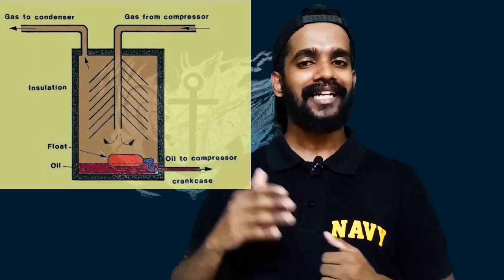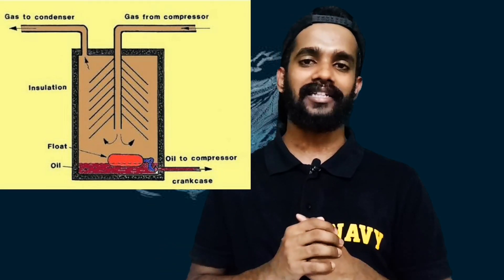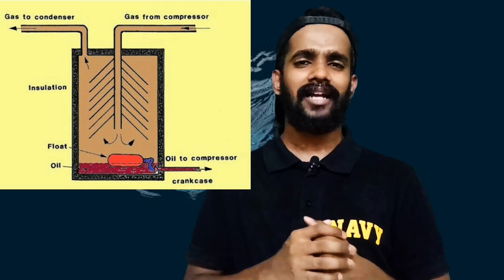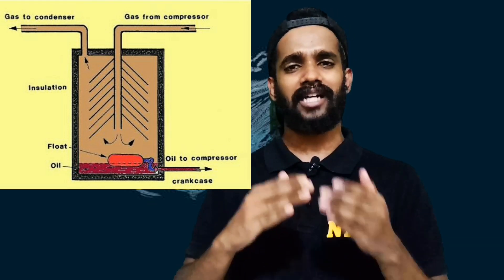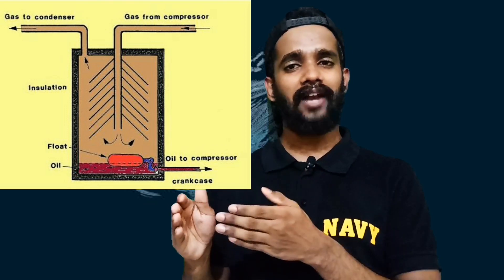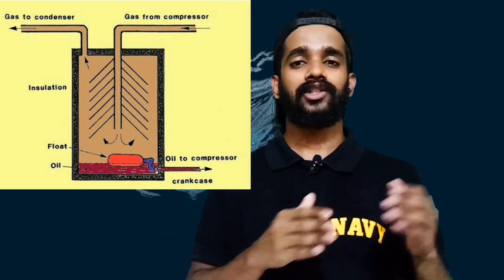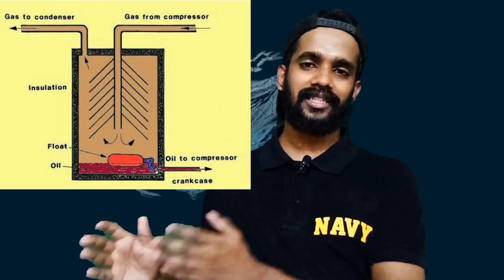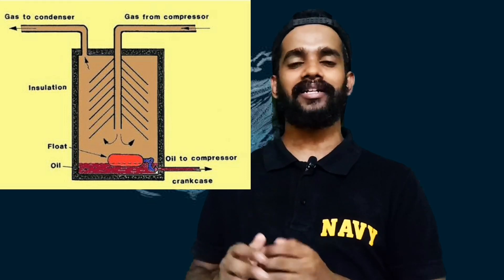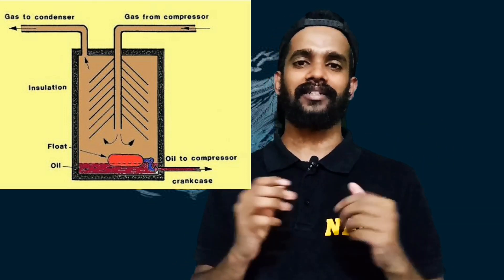Whatever oil is present at the bottom of the oil separator will be carried back to the compressor crankcase. As is clear from the diagram, upon reaching a certain level, the float will be raised upwards. As the float raises, the valve will be opened and the path becomes clear so that the oil goes back to the compressor crankcase. The oil goes back to the compressor crankcase via the float and valve arrangement, and the refrigeration goes to the condenser for condensing.